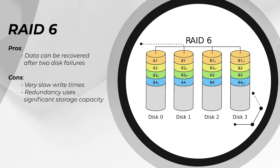RAID 6 is probably the closest thing you can get to a non-tape-based archive — we'll talk more about that in part 12. RAID 6 is very slow for both read and write, but it can withstand up to two drive failures while leaving your data intact. I personally use RAID 6 as a Time Machine backup for my desktop and any recently delivered editing projects, and when I'm ready to send it into cold storage, I put it onto an LTO tape.